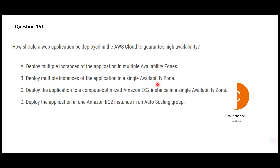For example, there is an AZ in Mumbai, India. What happens if that Mumbai AZ goes down? But if you use multiple AZs — suppose your second AZ is in Central India — your application will still run in Central India and your business users will not lose connection to your applications. So option A is correct.